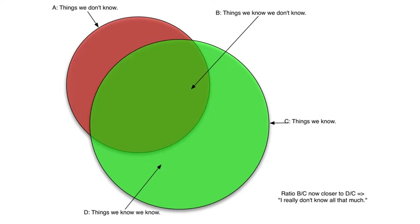So that's the Dunning-Kruger cognitive bias in a nutshell, and it's something that is important to recognize in yourself. I find this sort of thing fascinating, and I do recommend that you read up on this and similar biases. I hope that this class will help push you closer to both increasing what you know, as well as what you know you don't know, without making you feel like an imposter in the process.